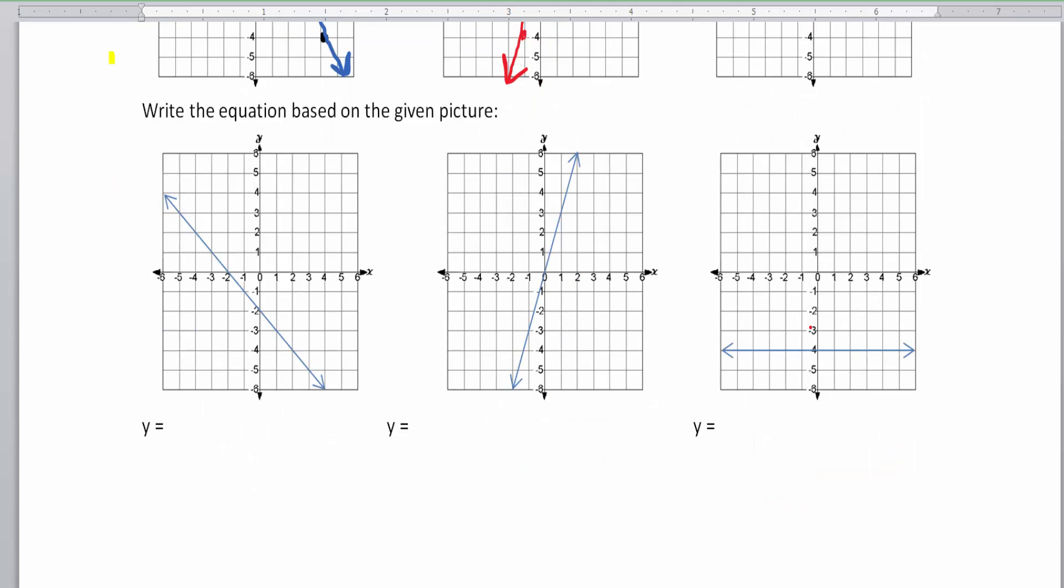Negative relationships is when x goes up and y goes down. Positive relationships when x goes up and y goes up. And then no correlation is when you just have a flat line. So for these last three problems on this video, I want you to try to pause the video and try to plot some points and then write the equations.